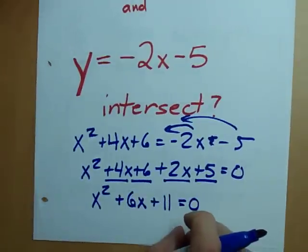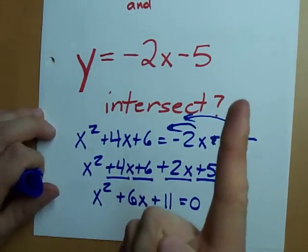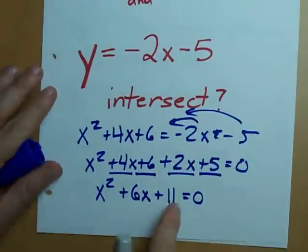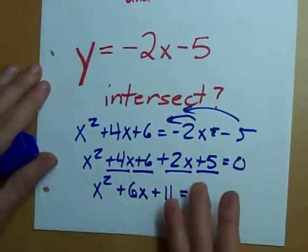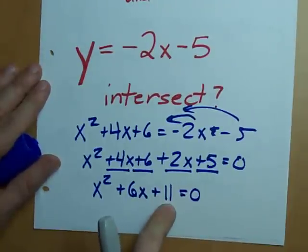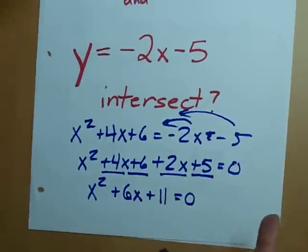Step three. Solve for x. Factor or use the quadratic formula. I prefer factoring. I can't factor that. I can't find two numbers that multiply to 11 and add to 6. I guess I'll have to use the quadratic formula.